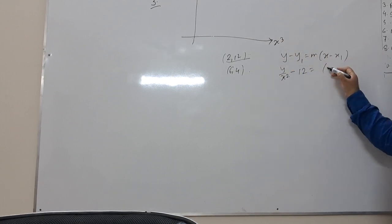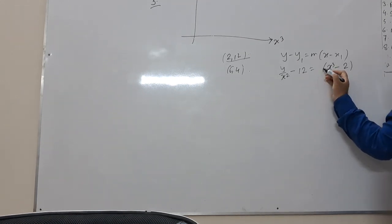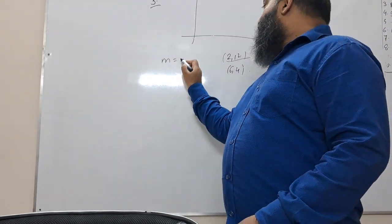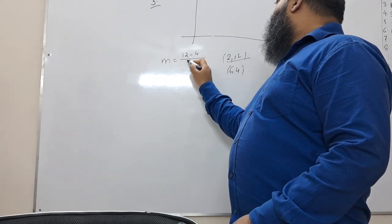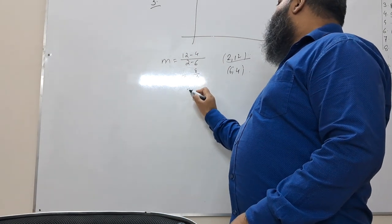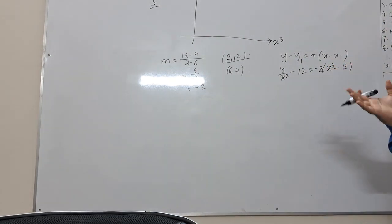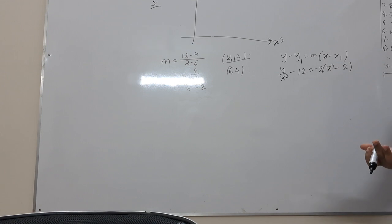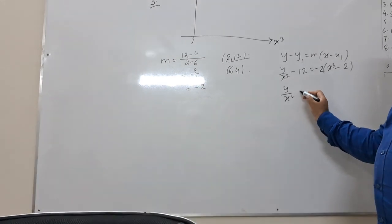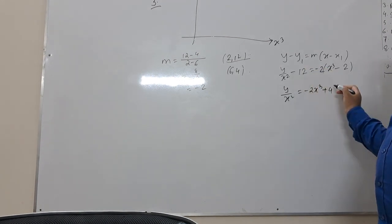X cubed. X1, if we join it 2 and then I will take gradient. 12 minus 4, 2 minus 6, 8 by minus 4, minus 2. Minus 2. The equation is minus 2 x cubed minus plus 4 plus 12.